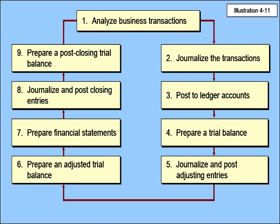As you can see on this graphic, there are nine steps. The first one is to analyze business transactions — you start with that. Then you journalize the transactions, and three, post to the ledger accounts, which is having a running balance of each account. Four, prepare a trial balance — the vanilla trial balance — which just ensures that your debits equal your credits.